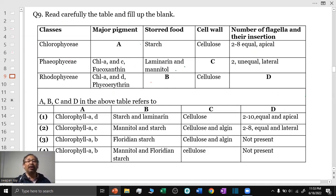And here in the Chlorophyceae, the major pigment is chlorophyll A and B. So, our answer lies in option number 3 and 4. Stored food material for the Rhodophyceae, B, in Rhodophyceae, the stored food material is the Floridian starch. So, the answer will be option number 3.